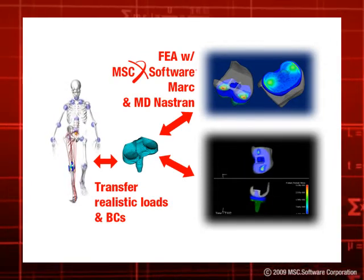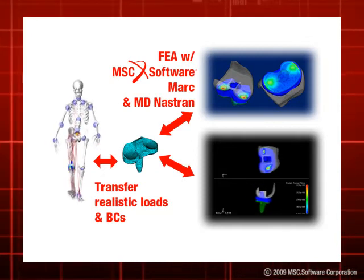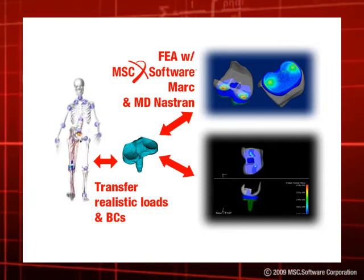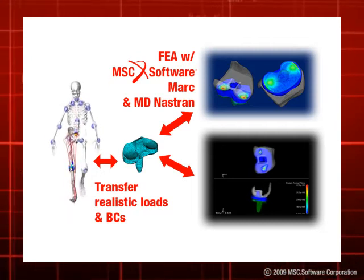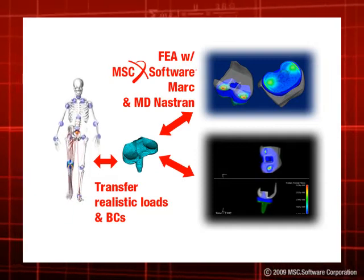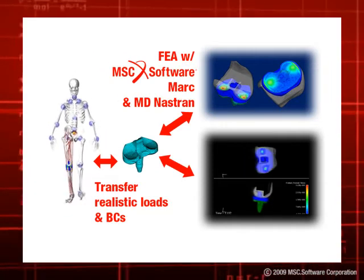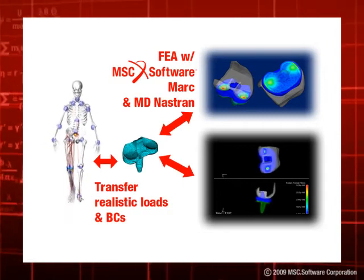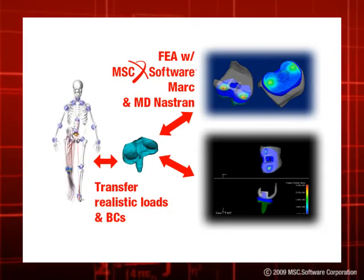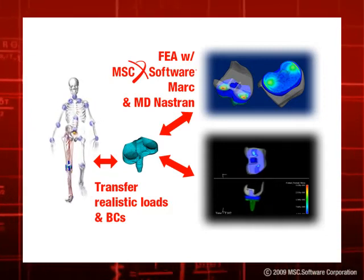Working in a common tool set and transferring loads effectively between FEA and biomechanics streamlines the process and gives engineers accurate results faster than traditional methods. It unites the best aspects of both methods to minimize computational complexity and expand the scope of multi-body dynamics. It will assess important non-linearities such as polyethylene and cement loads to evaluate how materials are behaving or how device components interact with bones such as the tibia.